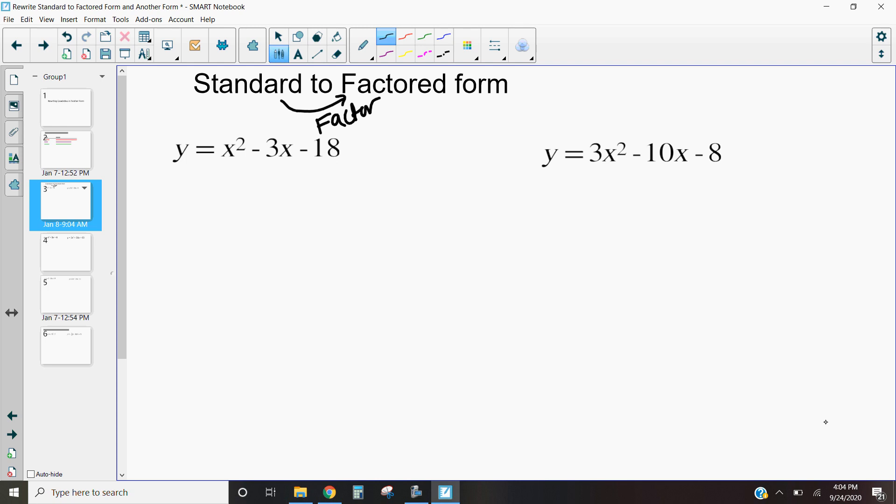Here I've got three terms, so I'm going to use my x method, and I want two numbers that multiply to negative 18 and add to negative 3. So multiply to negative 18, add to negative 3. Those numbers are going to be a negative 6 and a positive 3.